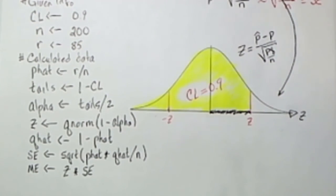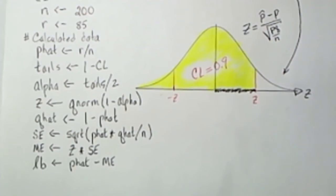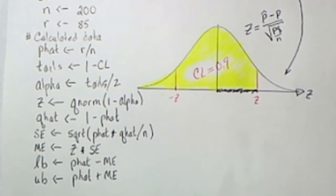Now we're finally ready to build our interval. The lower bound for our interval will be P hat minus the margin of error. The upper bound for our interval will be P hat plus the margin of error.